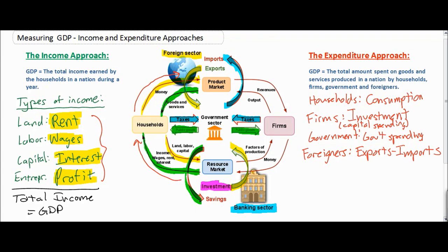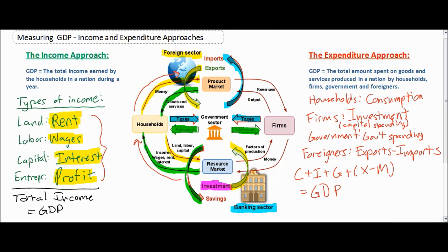If I buy a t-shirt made in China, the money I spent goes to a Chinese household, not to an American household — or in my case, a Swiss household since I live in Switzerland. So here we have the four different types of expenditures that occur in a country. These can be summarized as C plus I plus G plus X, which stands for exports, minus M, which stands for imports. If we add these together, we get the nation's GDP. This is known as the expenditure approach, and C + I + G + X − M gives us the total expenditures in a nation in a year.